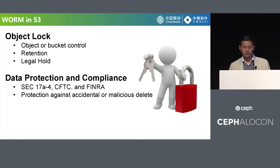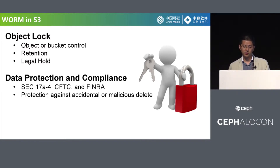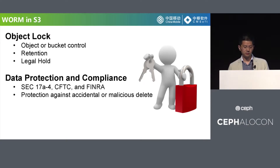S3 uses object lock to implement the WORM feature. It can help users prevent objects from being deleted or overwritten for a fixed amount of time or indefinitely. Users can use S3 object lock to meet regulatory requirements that require WORM storage, or add an extra layer of protection against object changes and deletion. The object lock can be set on objects or buckets, and it can have a retention period or just a lock with no time limit. S3 object lock has been assessed by enhanced associates for use in environments subject to SEC 17a-4, CFTC, and FINRA regulations.